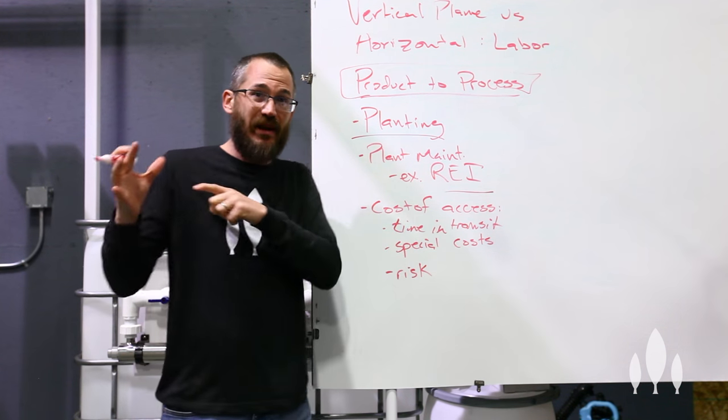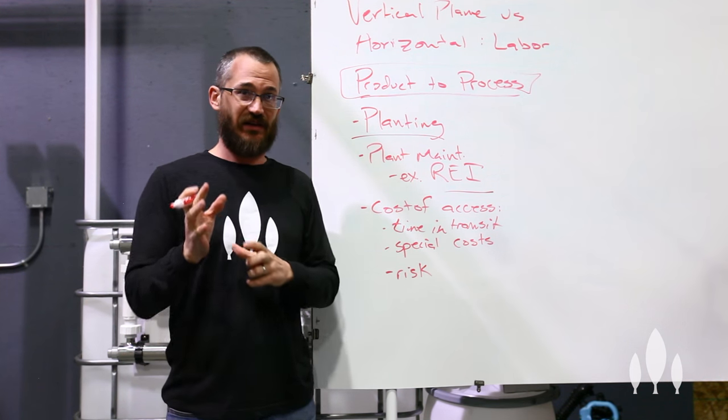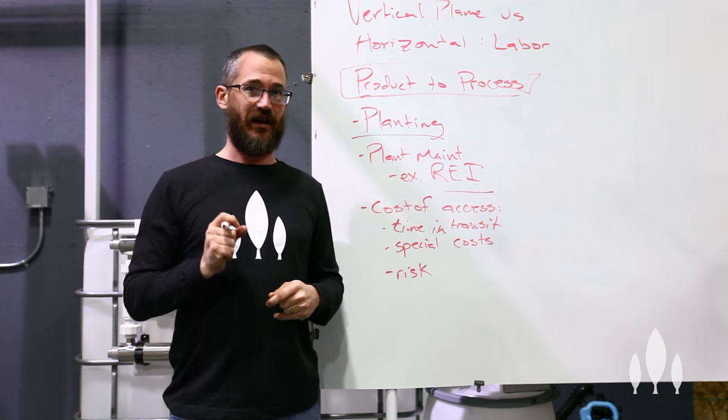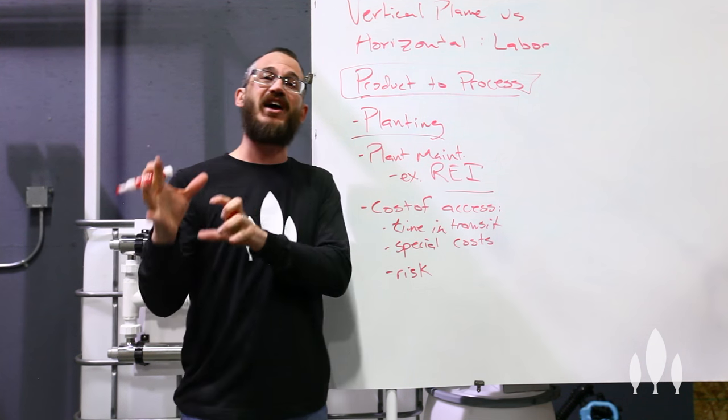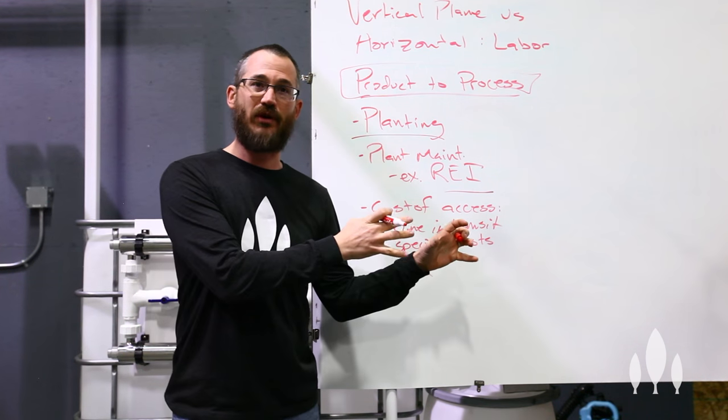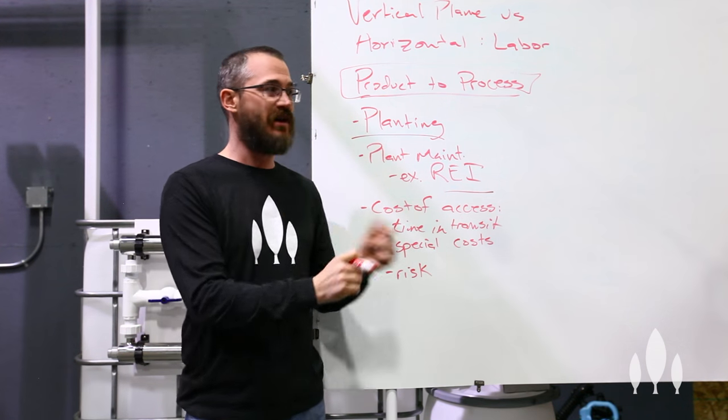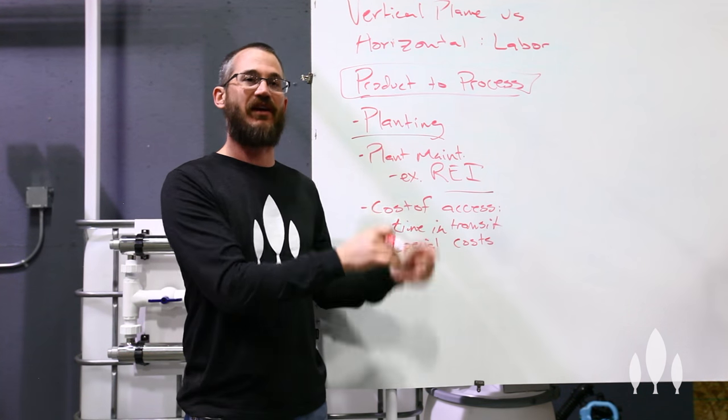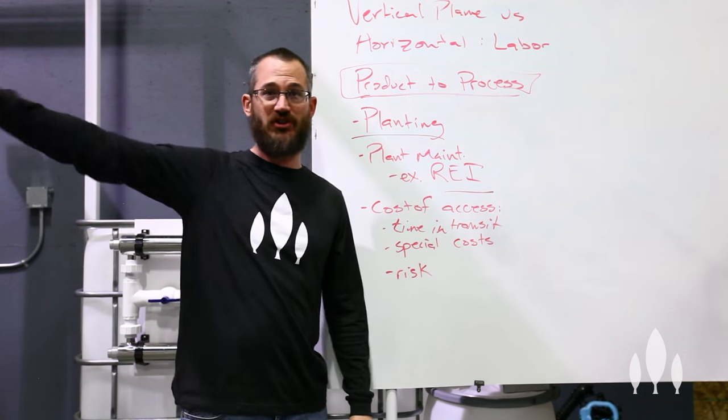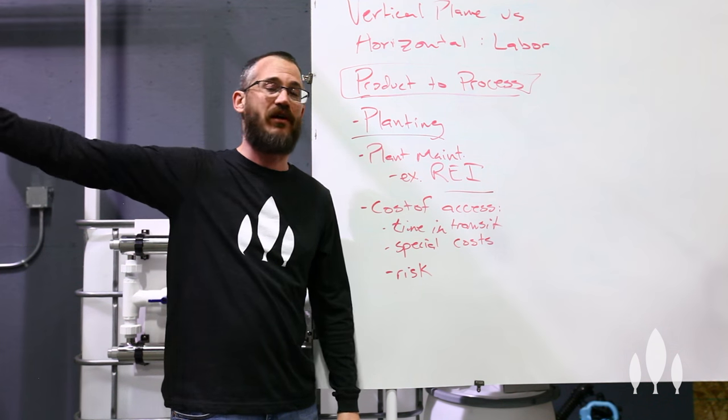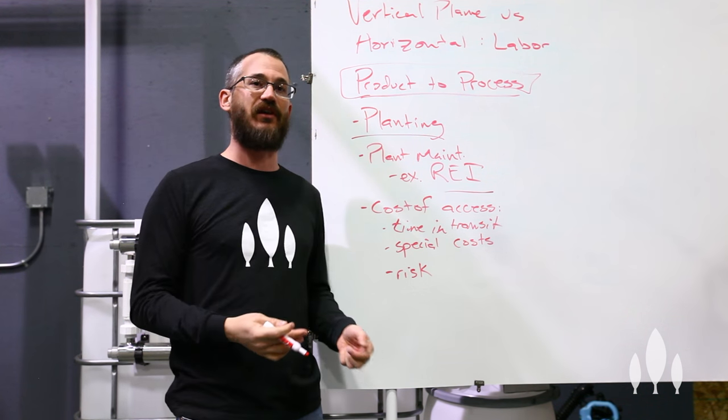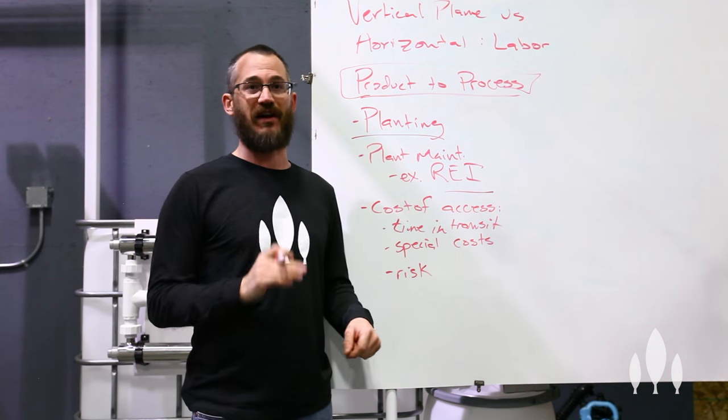So what we're able to do by being able to move these things around, because vertical plane production lends itself to this type of application, is we can actually take racks, wheel them into treatment tents, spray them in the tent, impose an REI on that very small amount of the system, that small tent, and still maintain the functionality of the main system. We can have laborers out there. They can be working. We can be doing things out there. We don't have to shut the whole facility down just because we sprayed one tiny part of it.